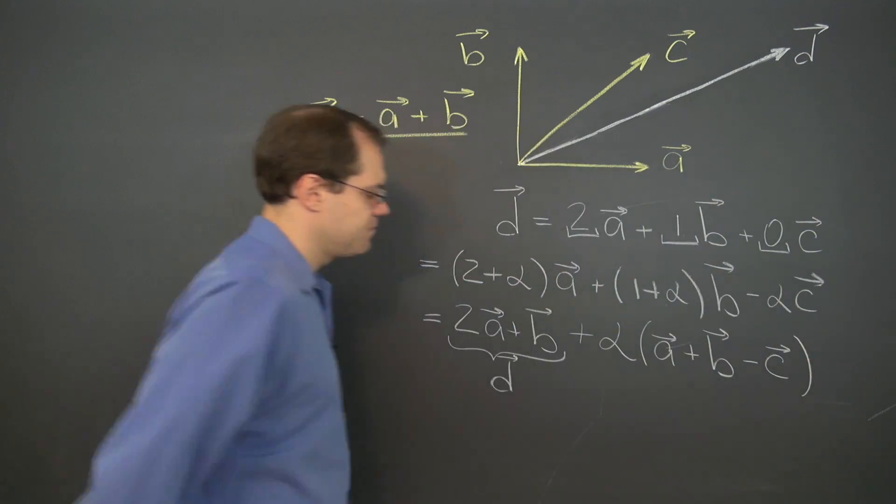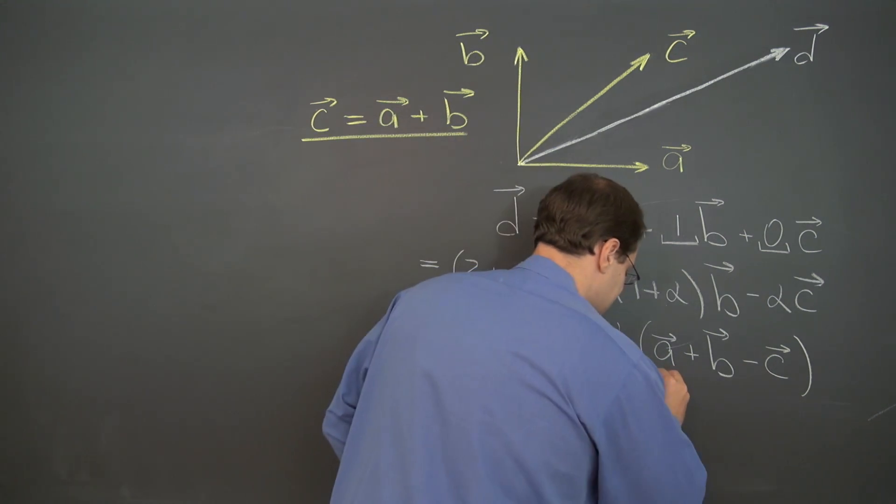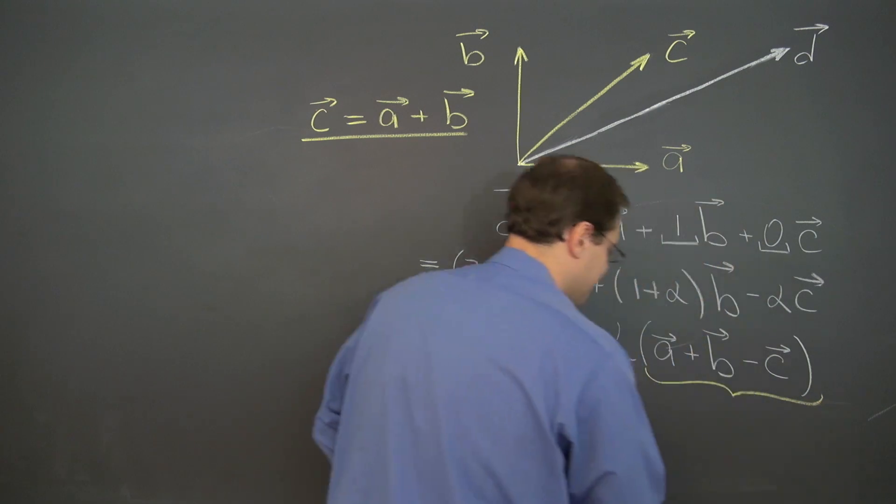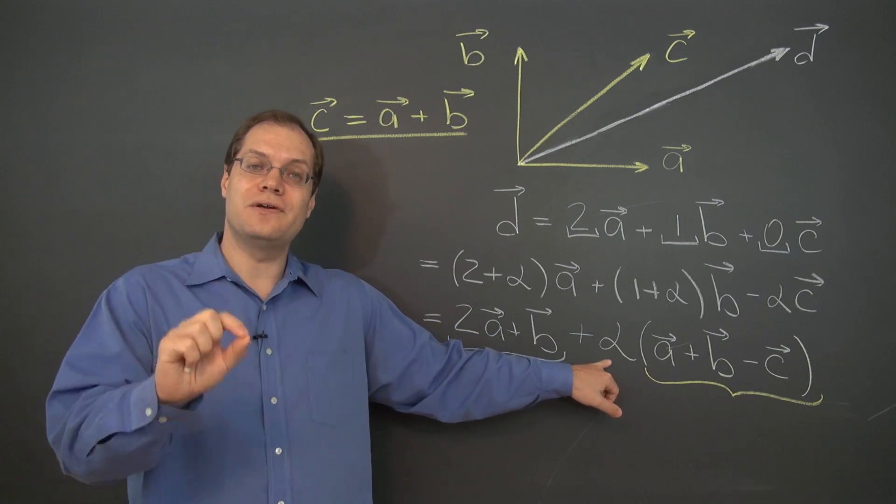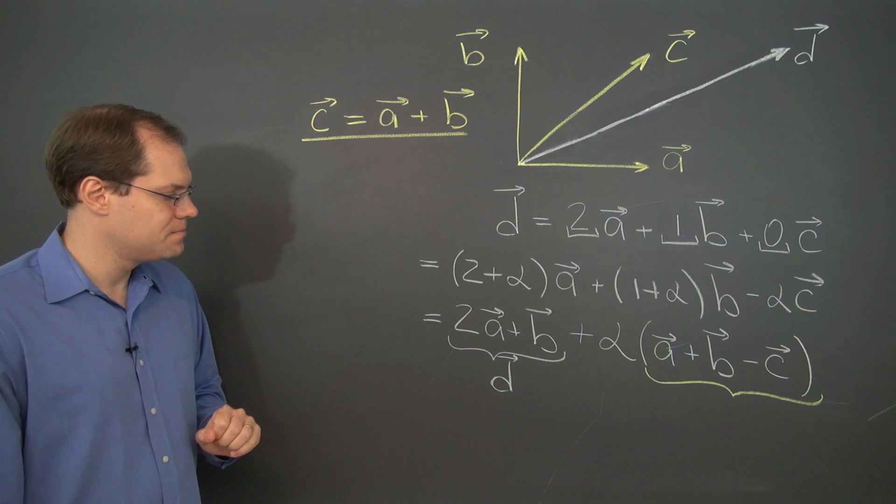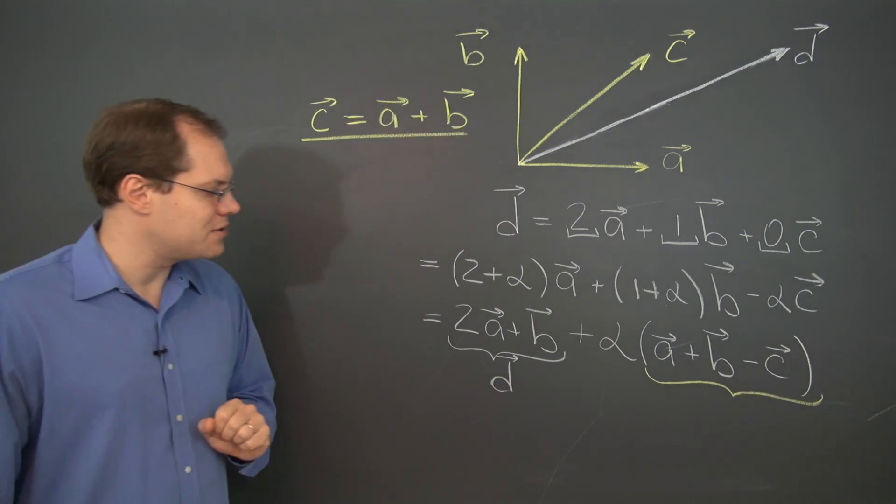And in parentheses, we have a plus b minus c. Very nice. Okay. And our focus right now will be on this expression right here. Just a different way of writing this. It actually isolates that degree of freedom that we have in the problem. That's one of the advantages of this notation.